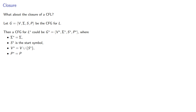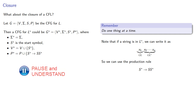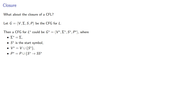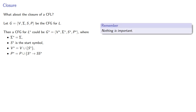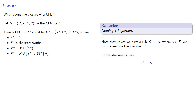Instead, do one thing at a time. Note that if a string is in the star closure, we can write it as a string in L concatenated with a string in the star closure. So we use the production rule S* → S S*. Now there is one important thing to remember: nothing. Unless we have a rule that takes S* to a terminal symbol, we can't eliminate the variable S*. So we also need the rule S* → ε (the empty string).